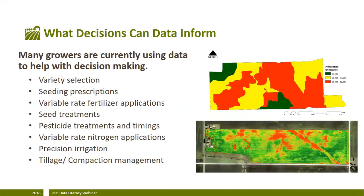So what sorts of decisions can you use to inform your decision-making? Many growers are using data currently to help with their decision-making — making decisions such as variety selection, creating seeding rate prescriptions, or variable rate fertilizer applications, just to name a few.